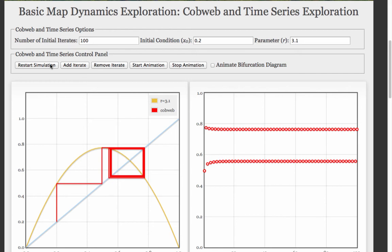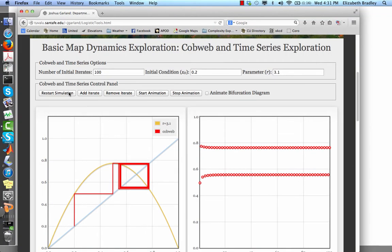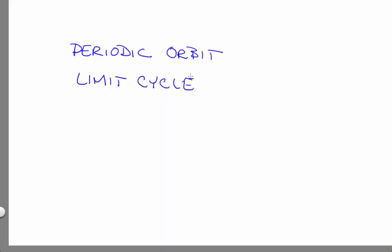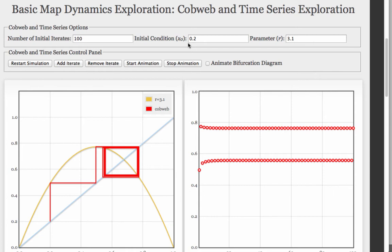Now it looks for sure like that fixed point is gone and something else is happening. Remember that I said that there were several types of attractors? This is another one. It's called a periodic orbit or a limit cycle. These are synonyms. Here, the period is 2.